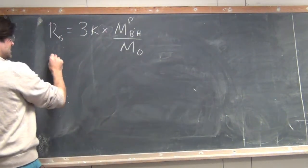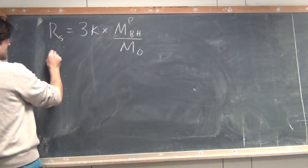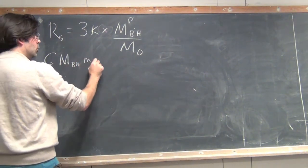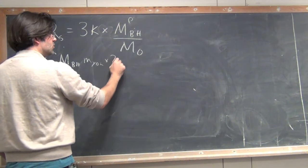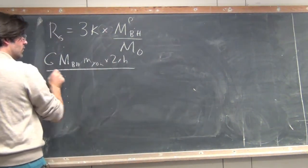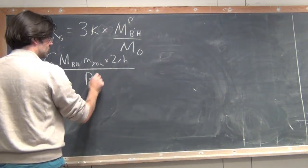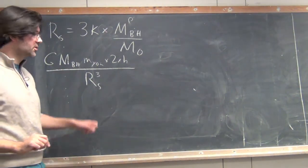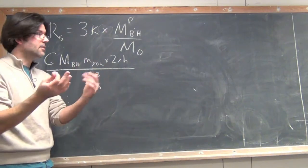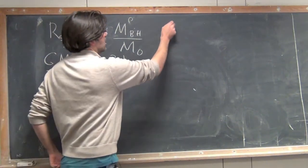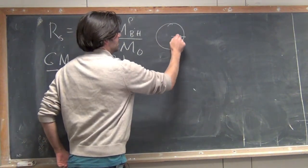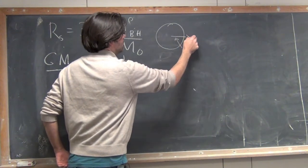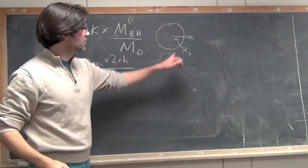We want to ask the question, when is the tidal force, so that's G M black hole M U times 2 times your height over the Schwarzschild radius of the black hole cubed. So this is the equation for the tidal force. I've plugged in the Schwarzschild radius, the radius of the black hole cubed. Let me just draw what the black hole is here. So this is the Schwarzschild radius. You are falling into the black hole and you want to know what the tidal force is here.